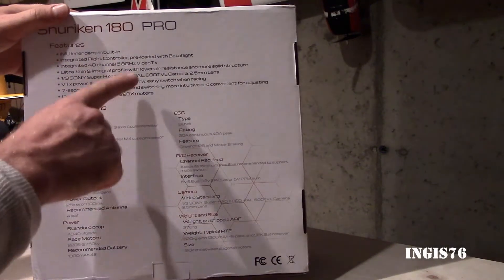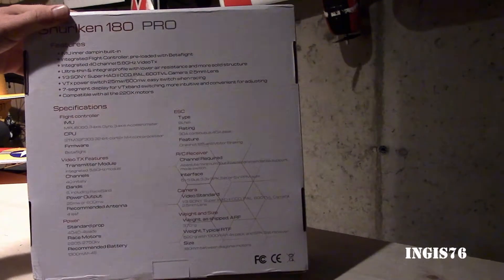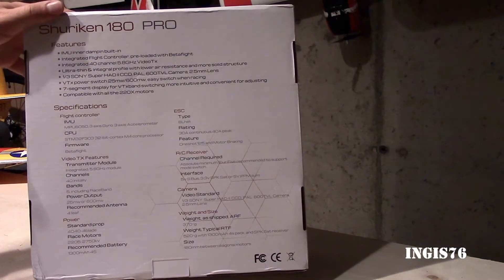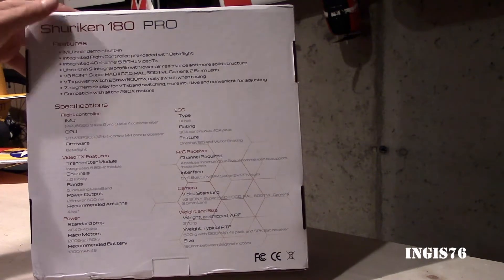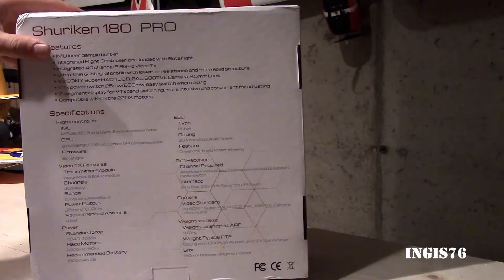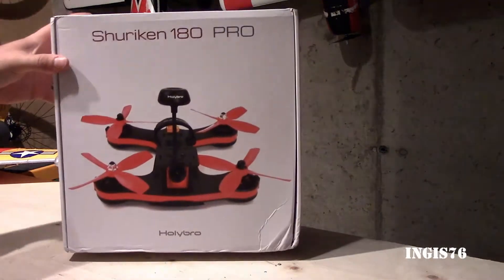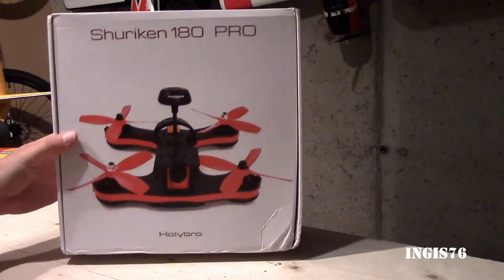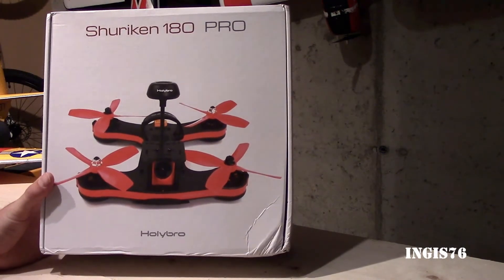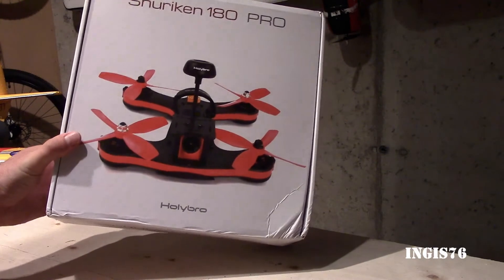It also has a 600 TVL camera with 2.5 millimeter lens. Of course, integrated flight controller, it goes with CleanFlight or Betaflight. And the first thing I'm gonna do with this one is to upgrade the CleanFlight to Betaflight. That's what I've been told I need to do.